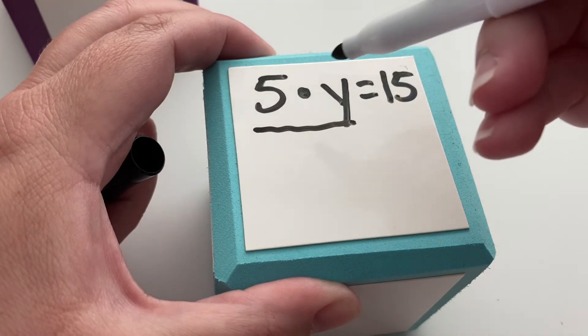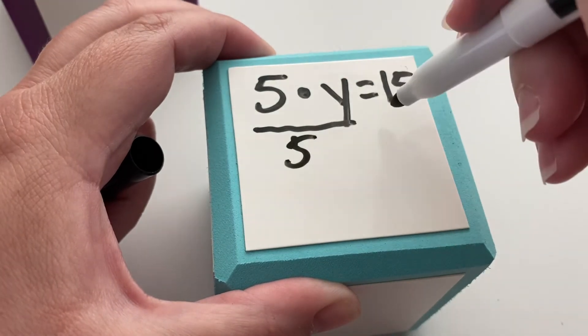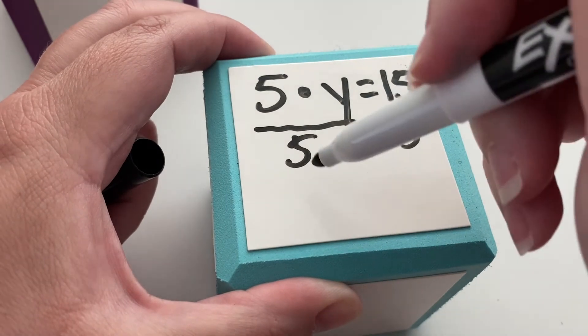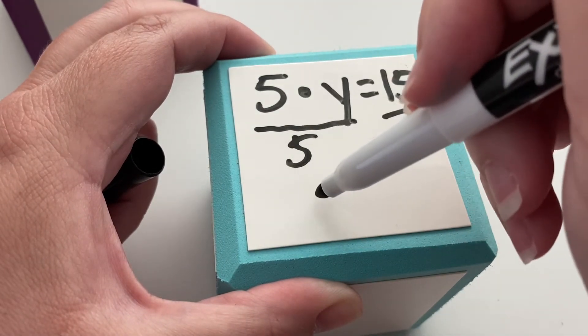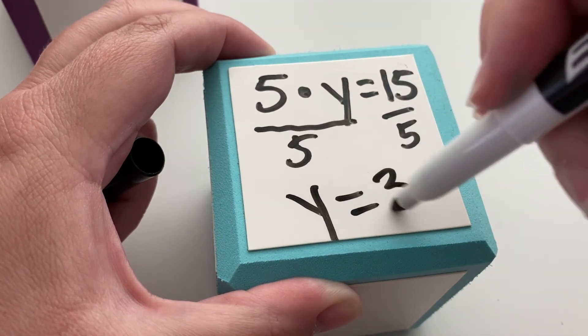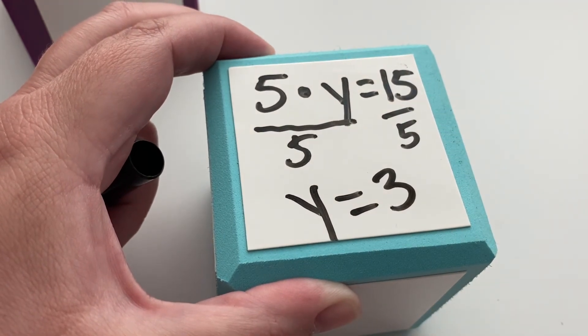So we're going to do 5 times y divided by 5. And we have to do it to the other side to keep the two sides the same. They have to be balanced. 5 divided by 5 is 1, so we're left with 1y. And 15 divided by 5 is 3. So y is equal to 3.